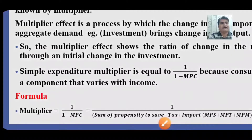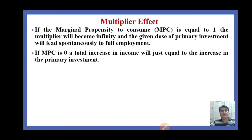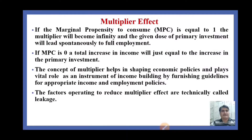We may rewrite this formula as 1 over (marginal propensity to save MPS + marginal propensity to tax MPT + marginal propensity to import MPM). If the marginal propensity to consume is equal to 1, the multiplier will become infinity and a given dose of primary investment will lead spontaneously to full employment. If MPC is zero, a total increase in income will just equal the increase in primary investment. The concept of multiplier helps in shaping economic policies and plays a wider role as an instrument of income-building by furnishing guidelines for appropriate income and employment policies. The factors operating to reduce the multiplier effect are technically called leakages.